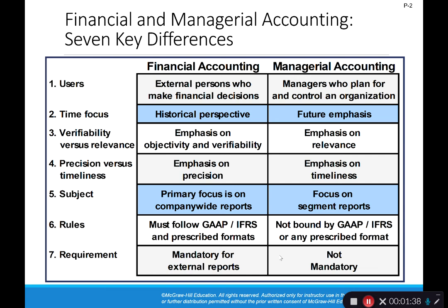That doesn't mean managers don't use financial accounting information to make decisions — they do. But the primary focus of financial accounting is to summarize what's happened over the years, create financial statements to provide that summary information, and then get that information out to external users. Managerial accounting obviously focuses on the managers of the business. So we're going to be manipulating financial accounting information in order to make it more useful for managerial decisions.